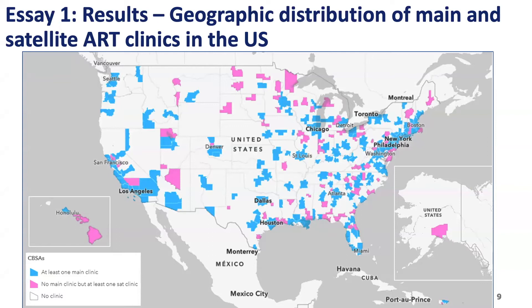Those numbers came from this map where all the CBSAs in the country are shown. Anywhere that's blue has at least one main clinic; anywhere that's pink has no main clinic but has at least one satellite clinic. The pink areas are where 8% of the reproductive-age population lives. The blue areas are where about 70% of the population lives — those with access to a main clinic. It's definitely better to live in an area with a main clinic because satellite clinics are generally not open on weekends, and you don't go to the satellite clinic for your egg retrieval or embryo transfer. You do have to travel to main clinics, but ideally you can travel there only occasionally if it's far away, using the satellite clinic instead.